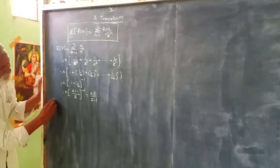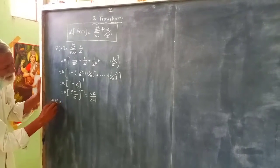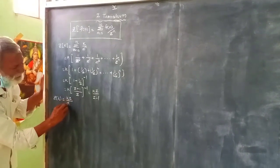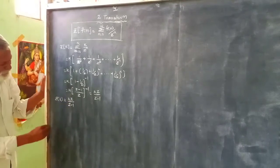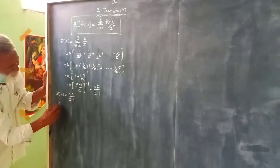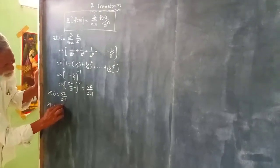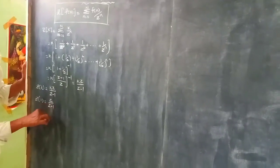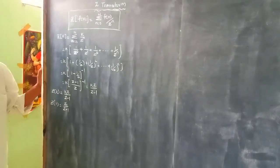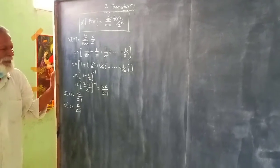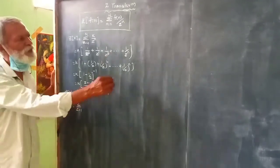The Z transform of k, if k is constant, then we get kz/(z-1). Z transform of 1 is z/(z-1). Z transform of 2 is 2z/(z-1).